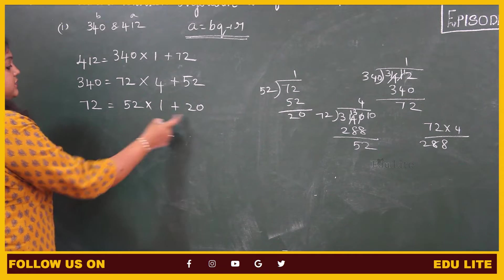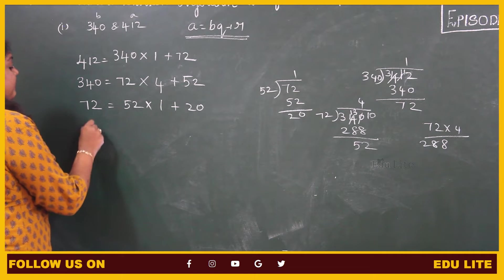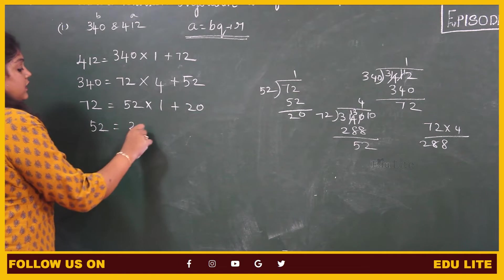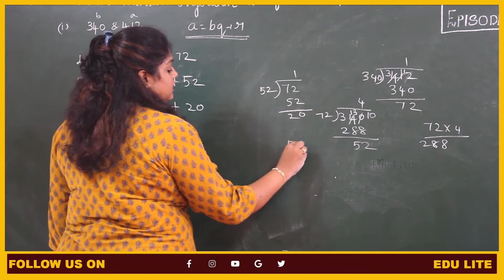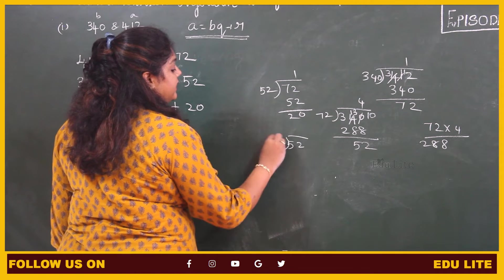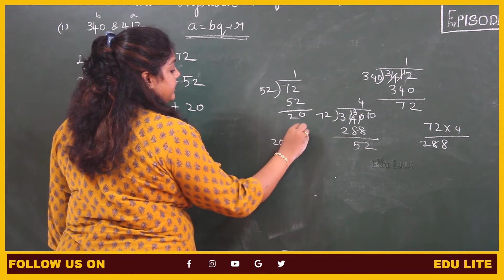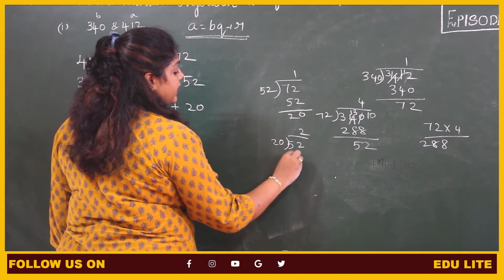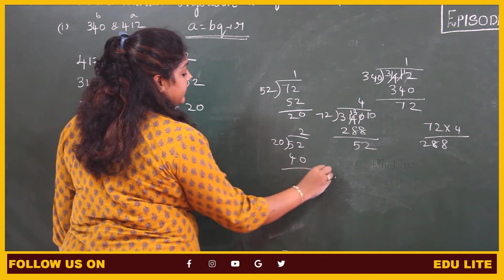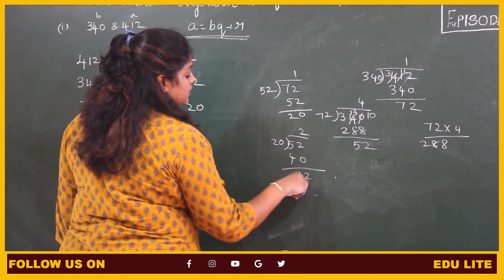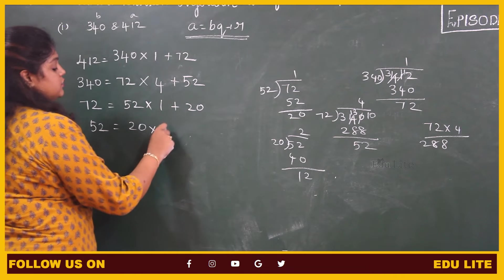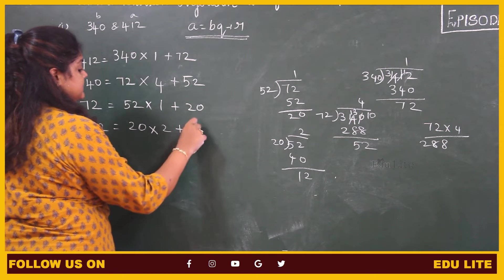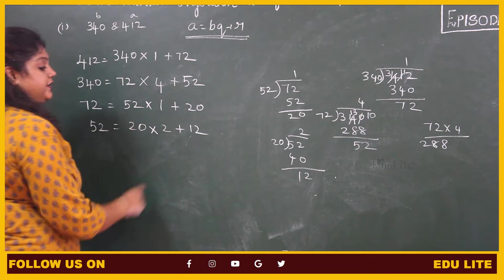So the remainder is not 0, we have to proceed. 52 divided by 20: 52 when it is divided by 20, 2 times 40 into 2 plus 12.